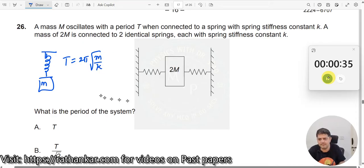Now, when you have a mass of 2m, t dash let us say, mass of 2m, but they are connected to two identical springs with stiffness constant k like this.